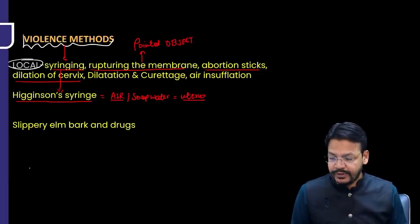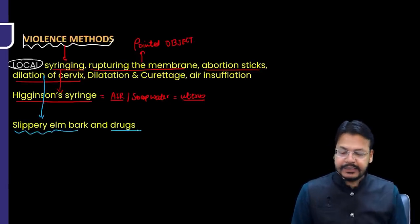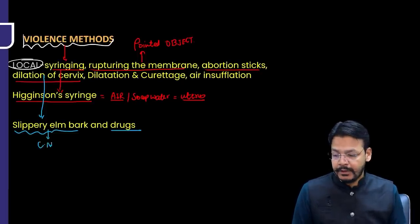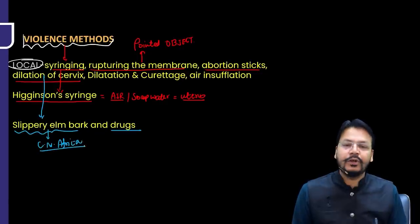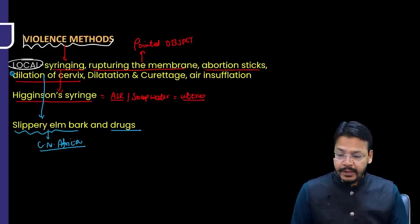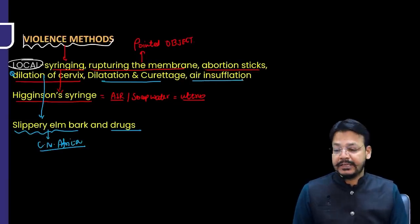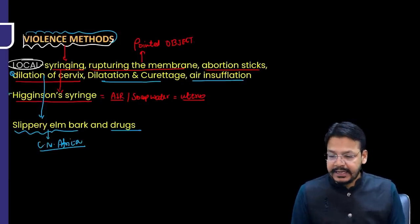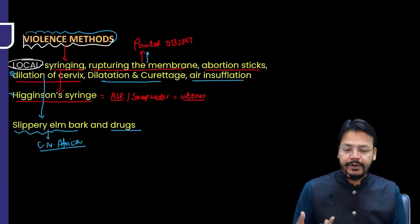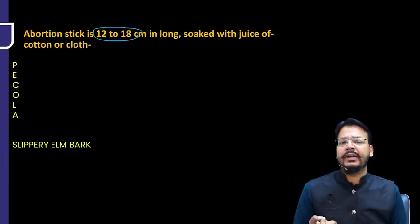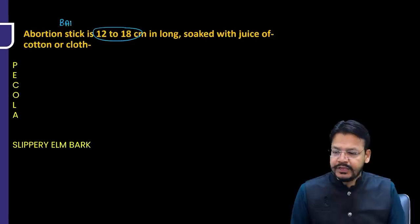Dilation of cervix can be done by slippery elm bark — used in Central and North Africa — and some drugs. Abortion stick is a bamboo stick 12–18 cm long with a cotton or cloth piece soaked with plant juices at the front. The mechanism is uterine contraction following vaginal irritation. The trick to remember common plants used is 'PECOLA': Plumbago, Ergot, Calotropis or Castor, Oleander, Lead products, Aconite.